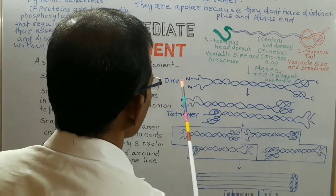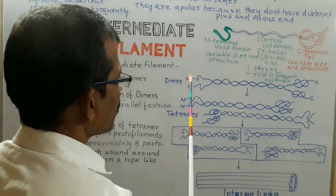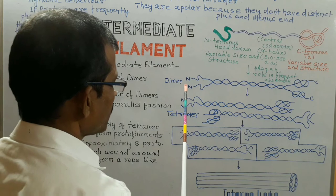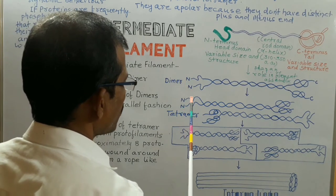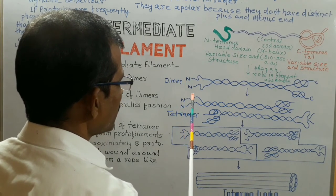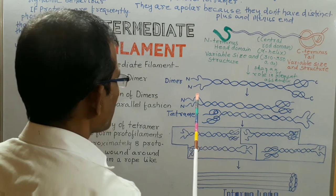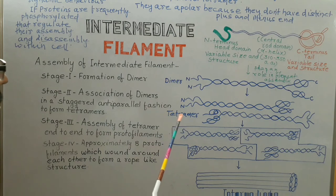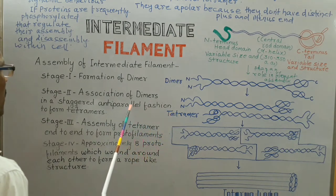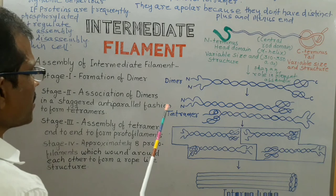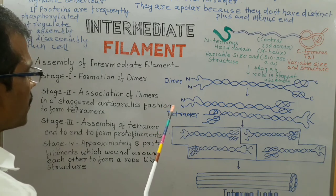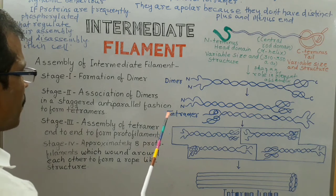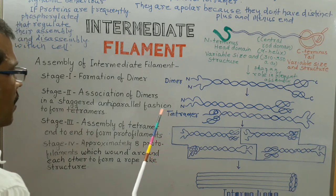Both ends of intermediate filaments are equivalent because they are assembled from anti-parallel tetramers. They are also apolar because they don't have distinct plus and minus ends. The intermediate filaments are generally stable and don't exhibit dynamic behavior, but intermediate filament proteins are frequently phosphorylated, which regulates their assembly and disassembly within the cell.